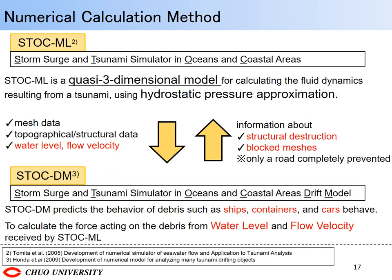Next, I will explain the numerical calculation method. StockML, which is a software developed by Tomita, was used for fluid calculation. The basic equations of this software are the continuity equation and the Navier-Stokes equation. Next, StockDM, which Honda developed, is the model to simulate tsunami debris drifting behavior. This model calculates the force acting on the drift object from the drag and inertial forces. By connecting these, a force received from the fluid is calculated. This calculation passes the water level and fluid velocity data from StockML, but StockDM doesn't affect the fluid unless the road is completely prevented.